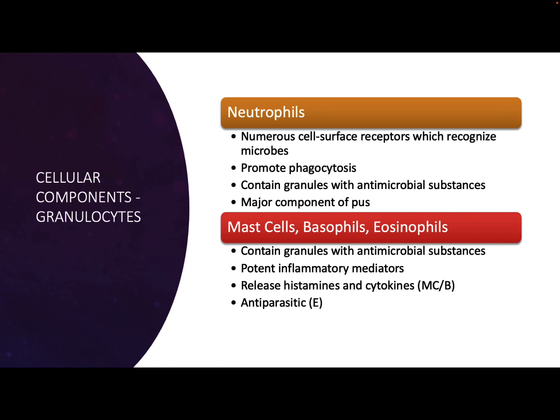The other group of granulocytes — generally found as a very low percentage of the overall leukocyte or white blood cell count — include mast cells, basophils, and eosinophils. Broadly, they are granulocytes so they have those antimicrobial substances. They are potent inflammatory cells — they cause high levels of inflammation: redness, swelling, pain, heat — that inflammatory process.